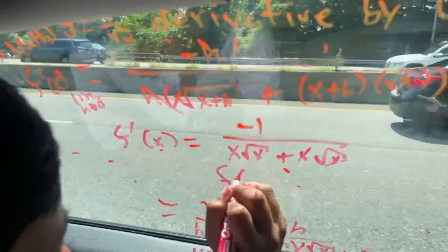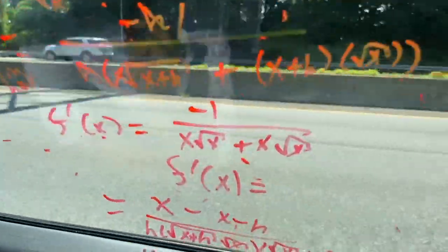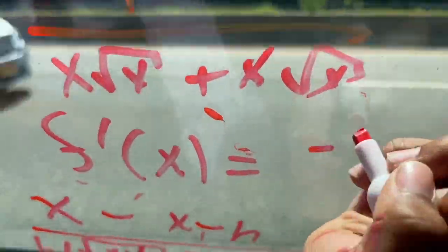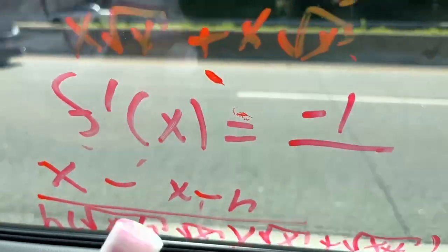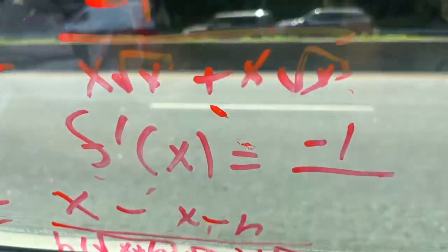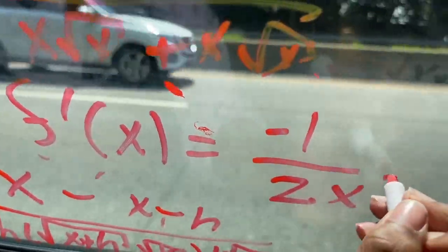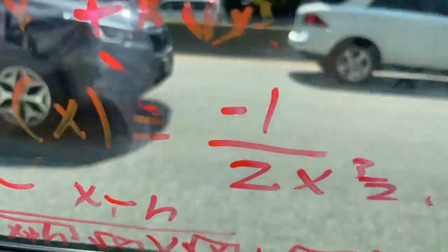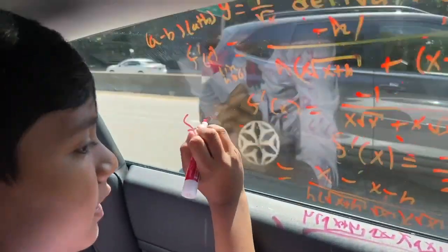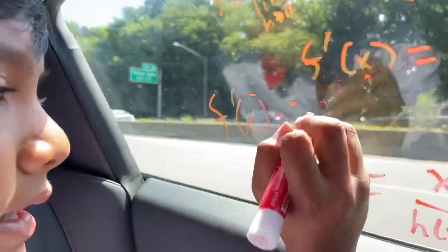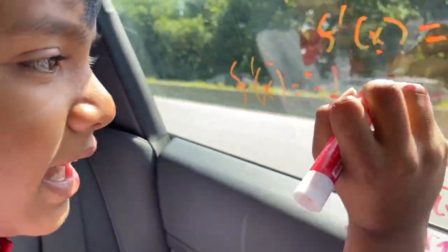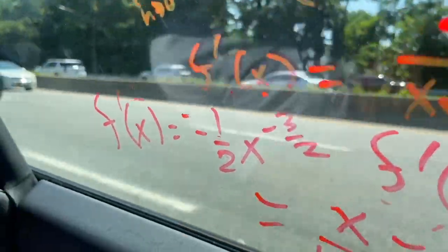So that means that f prime of x, which is our derivative, is equal to negative 1 over 2x times the square root of x, is really x to the 3 halves. So that means that our derivative is negative 1 over 2 times x to the negative 3 halves. Thank you everybody for watching. We'll see you in the next video.